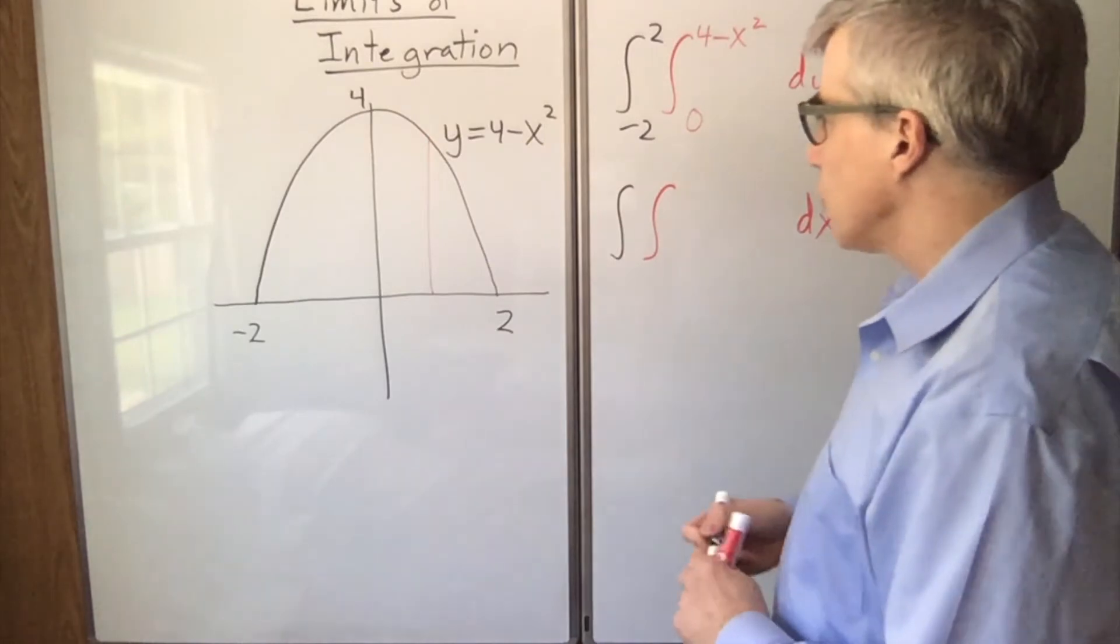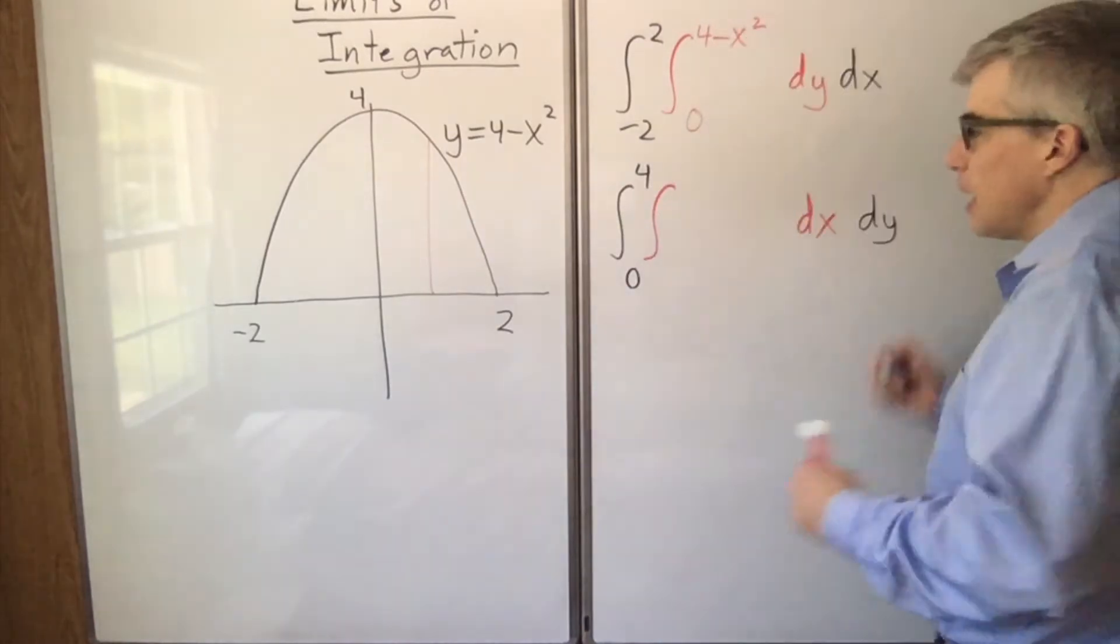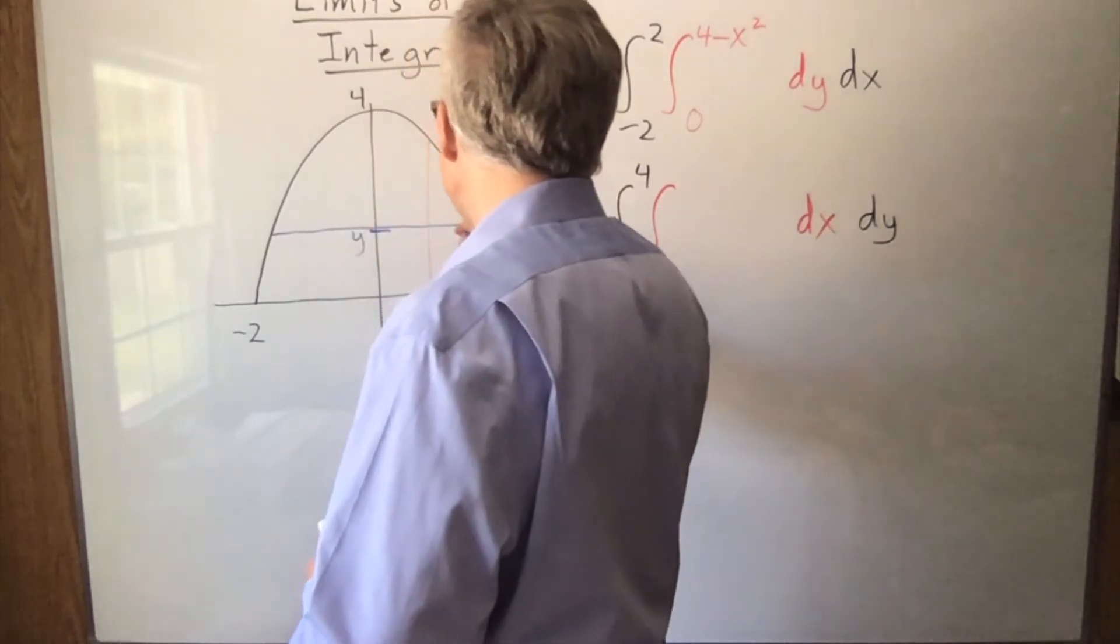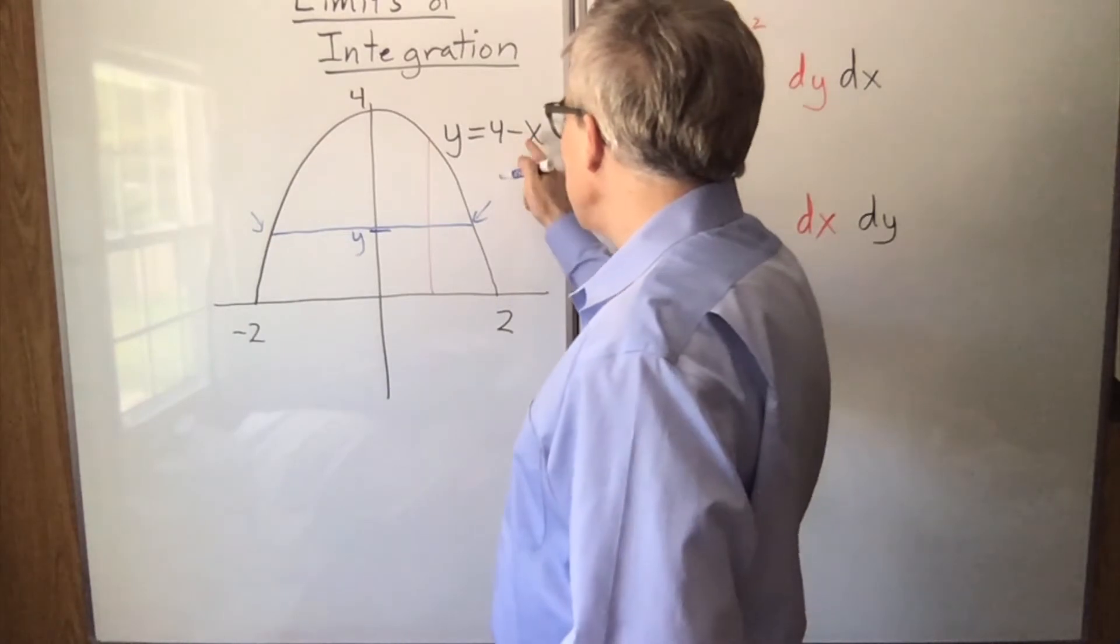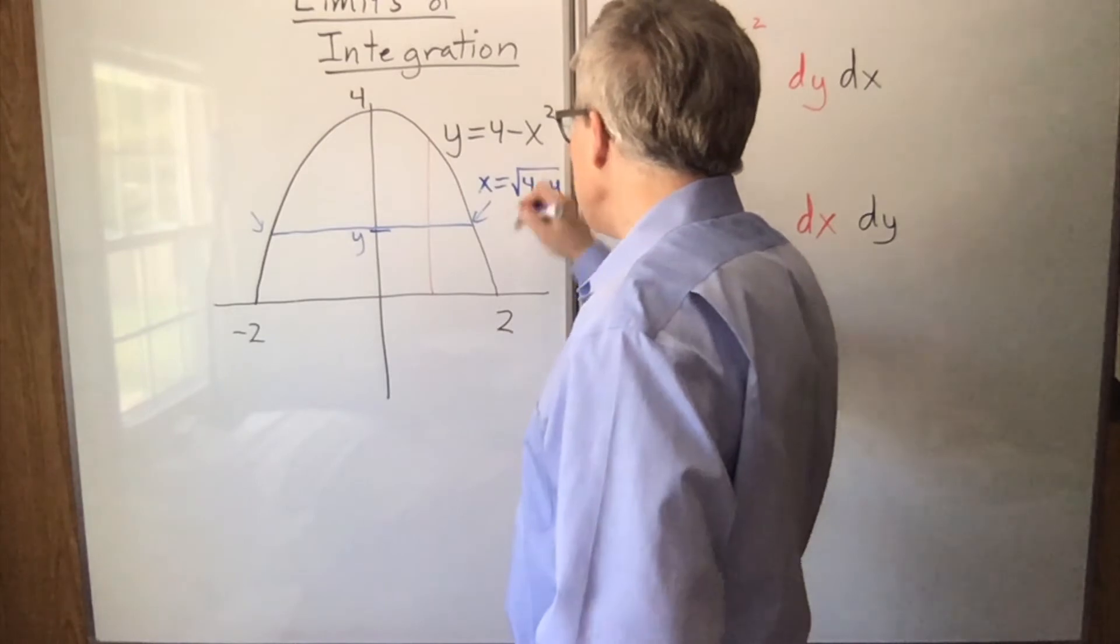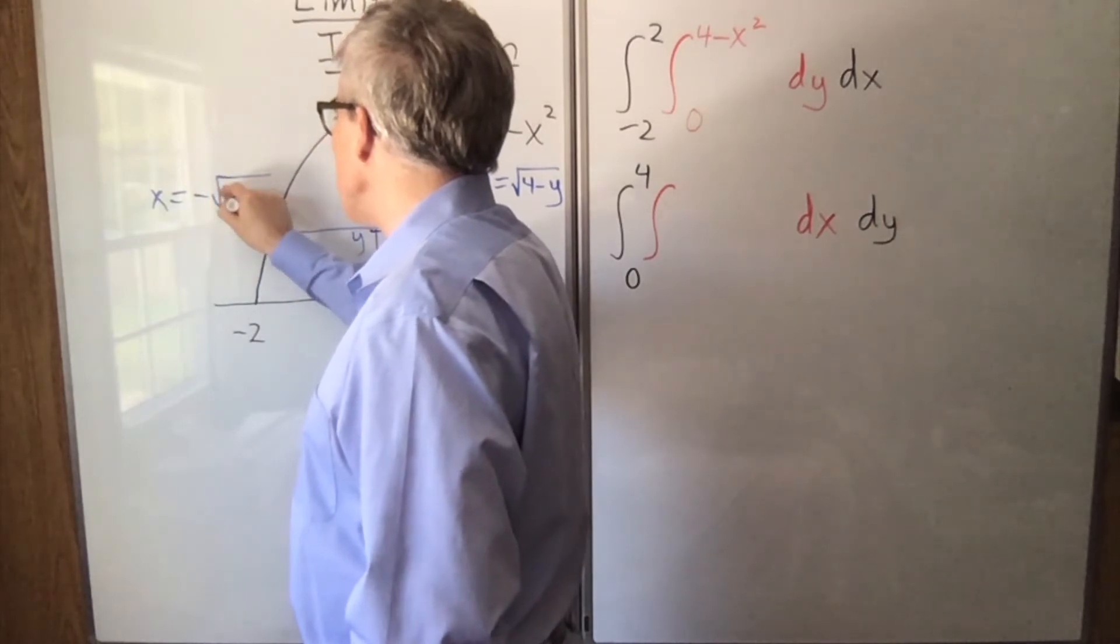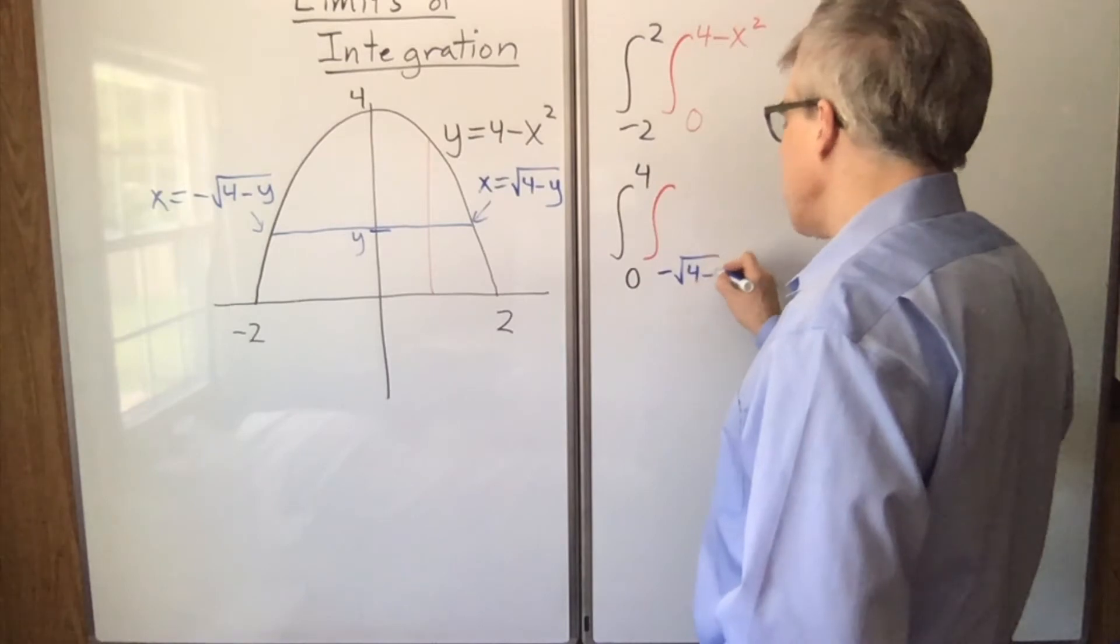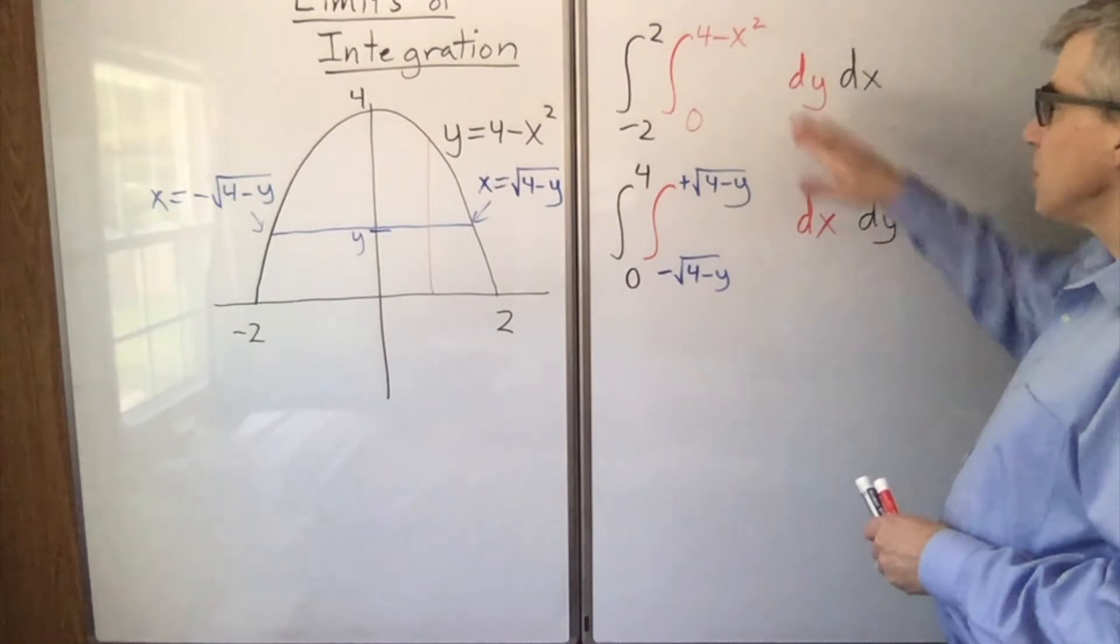On the other hand, if we're integrating over y, y ranges from 0 to 4, lowest value to highest value. And then for a particular value of y, x ranges from here to here. Now this value, if we solve this for x, is the square root of 4 minus y. And that is x equals negative square root of 4 minus y. And those are our limits, negative square root of 4 minus y to positive square root of 4 minus y.